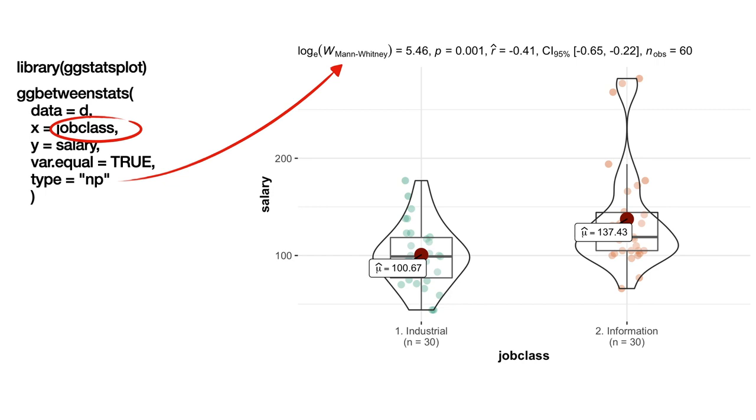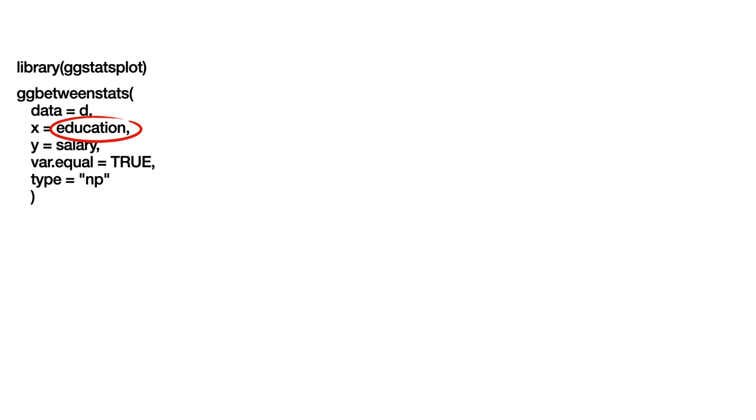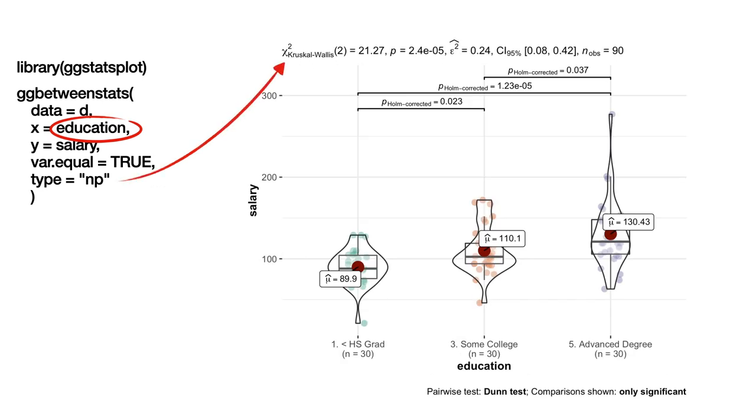Now, the variable job class on the x-axis allowed us to compare two groups. What if we had more than two groups? Let's change only one word in our code and see what happens. Suddenly, we get completely different and more complex statistical tests. Why is that? The only difference between this variable is the number of groups. Job class has only two groups, which require t-test or Mann-Whitney test, while education has more than two groups and requires ANOVA or Kruskal-Wallis. And the ggStatsPlot package knows it. Here, the author beautifully showed that these differently named tests all do the same thing. Compare groups.